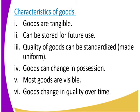Let us look at the characteristics of goods. One, goods are tangible — you can touch them. Two, goods can be stored for future use. You can store a book in order to use it tomorrow. You can store a banana in order to eat it tomorrow. You can store a laptop for someone to use it next year.